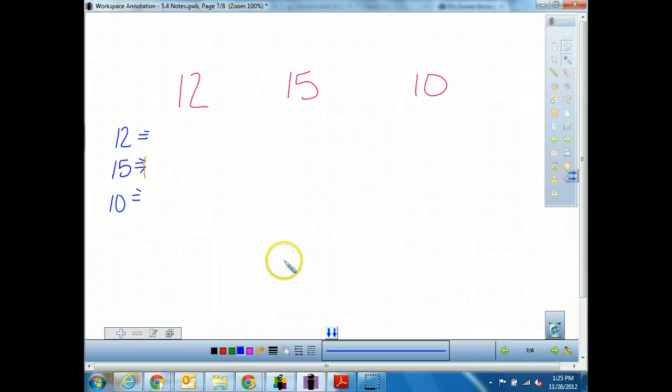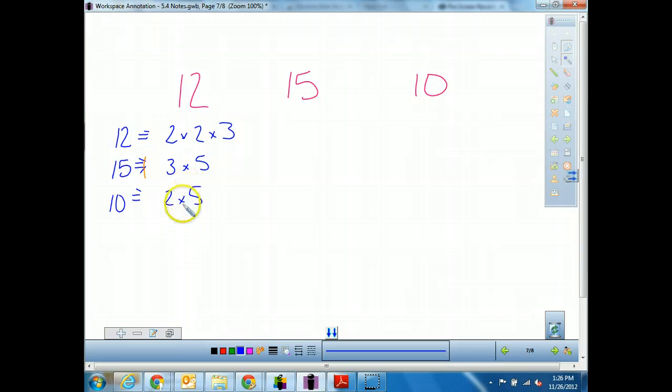So what happens when I have three numbers here? I'm still going to do the same thing. Do the prime factorization. Find the prime factorization for all three of these and write them out. I want you to do the factor trees on your own. When you do that, you should have gotten a 2 times a 2 times a 3. Then we've got a 3 times a 5 for 15. And I have a 2 times a 5 for a 10. Right? So that's what you should have gotten after doing your factor trees.